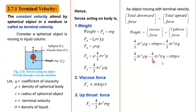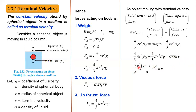Simplifying the equation, we transfer 4/3 pi r cubed sigma g to the left side and take common terms. Solving for v, we get the terminal velocity formula: v equals 2/9 times r squared times (rho minus sigma) times g, divided by eta. This is the expression for the terminal velocity of a spherical object.